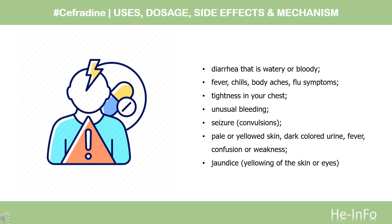Side effects of Cephradine include: diarrhea that is watery or bloody, fever, chills, body aches, flu symptoms, tightness in your chest, unusual bleeding, seizure, convulsions, pale or yellowed skin, dark-colored urine, fever, confusion or weakness, and jaundice — yellowing of the skin or eyes.